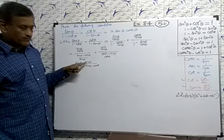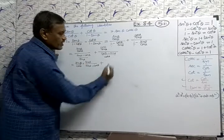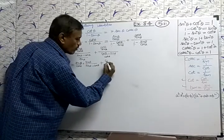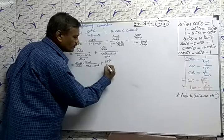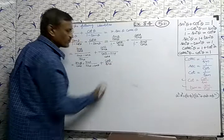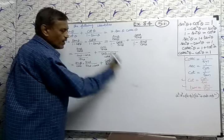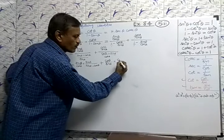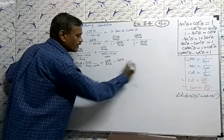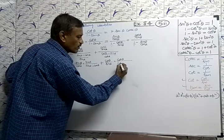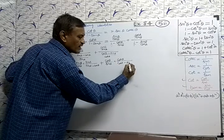The denominator goes upside down, then plus, the same thing for the second term: cos theta by sine theta, multiplied by cos theta divided by (cos theta minus sine theta).